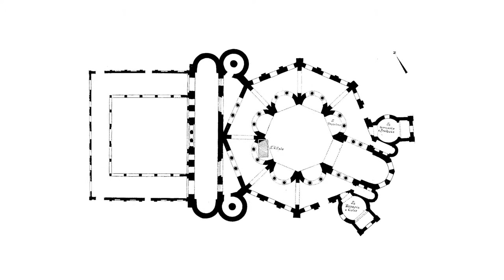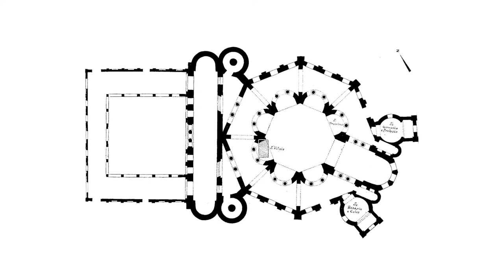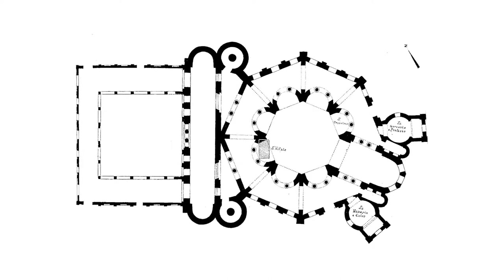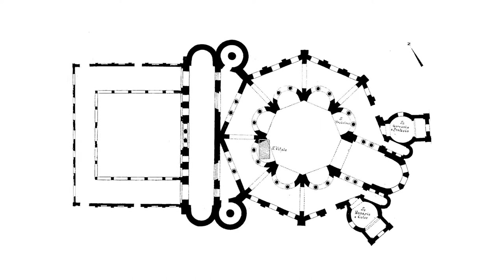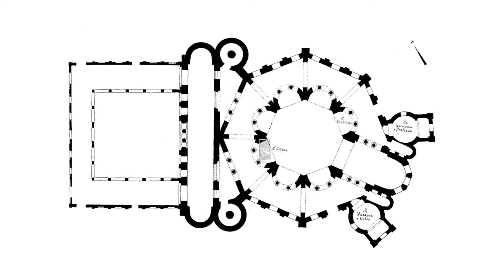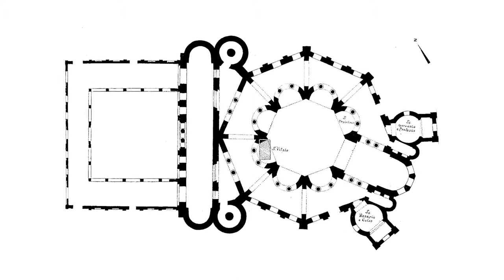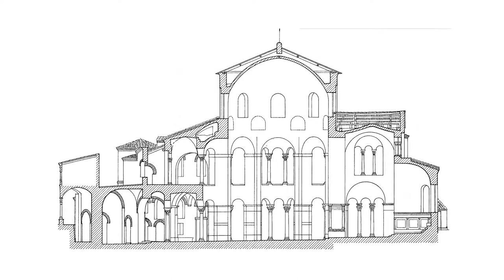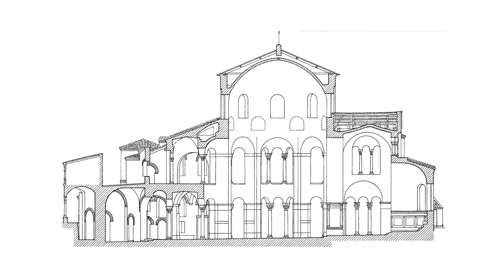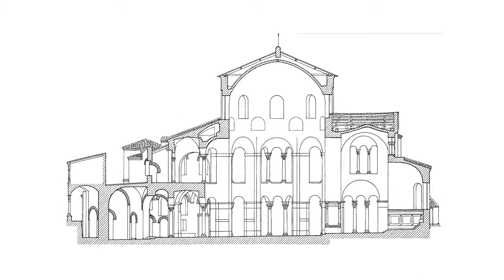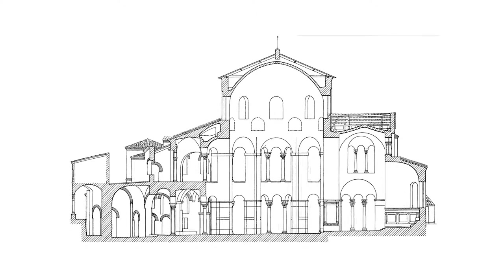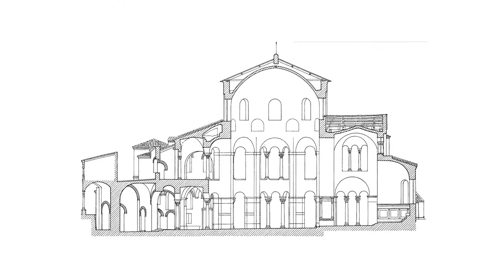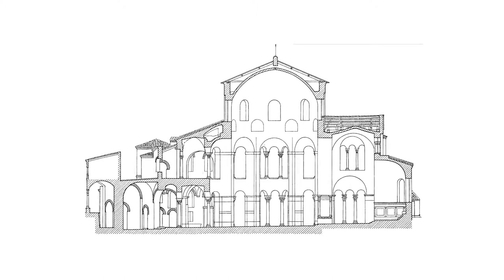In San Vitale, the configuration is more complex and referred to as a double shell. The polygonal inner space covered by the central dome is surrounded by lower spaces on two levels with an ambulatory and a matroneum. The main central space and the side ones are linked and separated at the same time by big pillars, which alternate on the first level with curved exedras with arches on columns, creating various light and spatial effects.